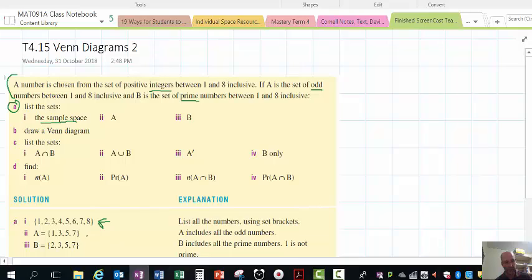A, the odd numbers from 1 to 8 would be 1, 3, 5 and 7. Set B, the prime numbers would be 2, 3, 5 and 7.